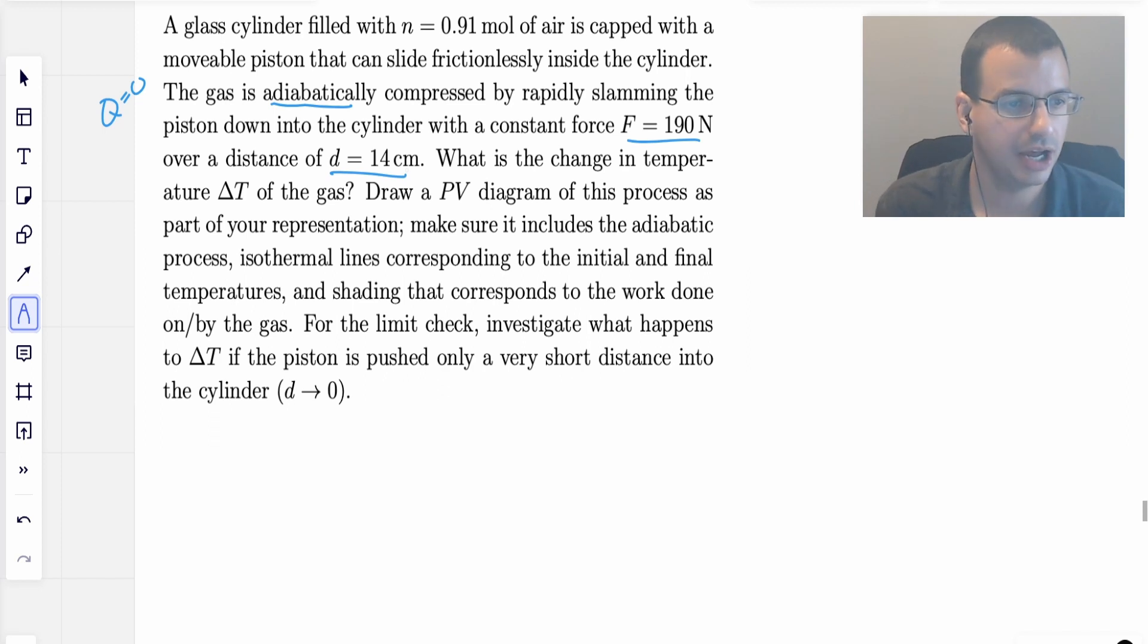Draw a PV diagram as part of the representation. Make sure it includes the adiabatic process and isothermal lines, and shade according to work done on by the gas. Also, investigate what happens to delta T as the distance delta X goes to zero.